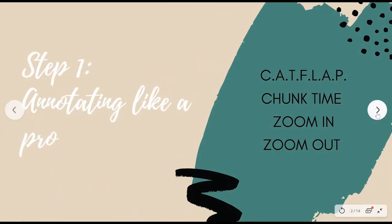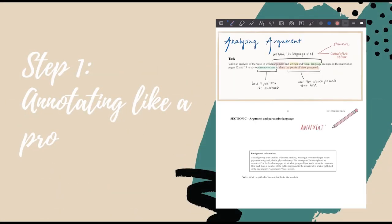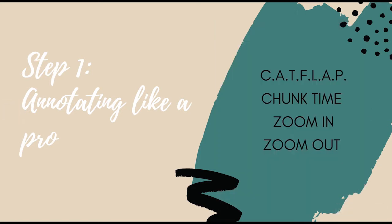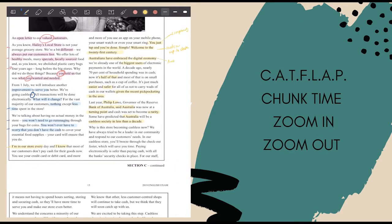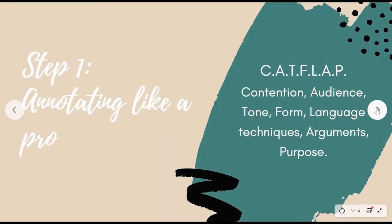Step one: annotating like a pro. We suggest using an acronym like CATFLAP so that you can remember the structure easily in an exam. We also encourage you to chunk the article down into significant pieces, then zoom in and zoom out, analyzing the language and the structure together. CATFLAP stands for Contention, Audience, Tone, Form, Language Techniques, Argument, and Purpose.